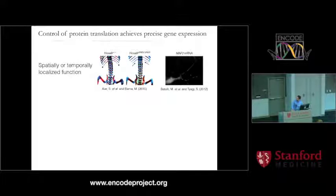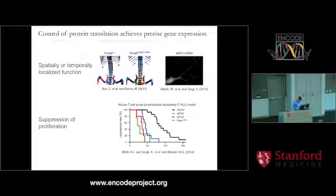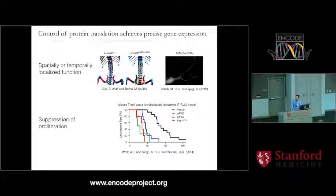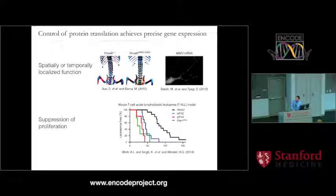In neurons, there's extensive translational control where RNA granules are shipped out to dendritic processes to locally activate translation. And in cancer, translation is broadly dysregulated, such as this leukemia model where introduction of either of two translation factors causes a more severe leukemic phenotype than knockdown of the tumor suppressor P10.